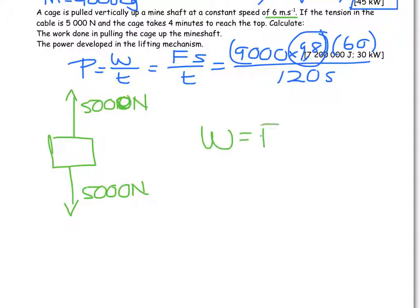Work done is the force to pull up times the distance that it goes through. So the first thing I'm going to have to do is work out the distance. And I can do that by saying that I have 6 meters per second for a constant 4 minutes. So it's very easy. I can say distance equals velocity times time, which is 6 times 240. And I land up with 1,440 meters.